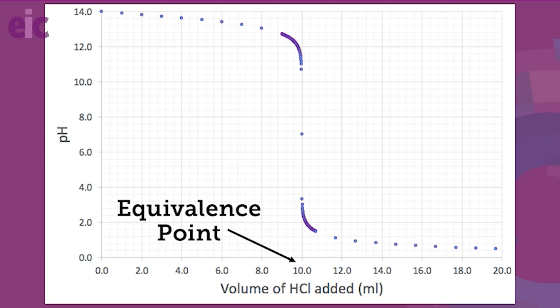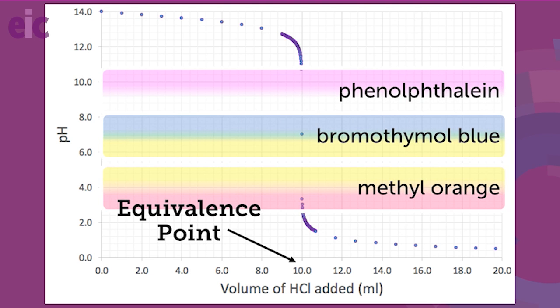When it comes to a strong acid reacting with a strong base, you're laughing, because the near vertical part of the pH curve we saw appearing earlier is so broad that lots of indicators will change colour very close to your equivalence point.